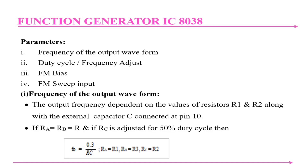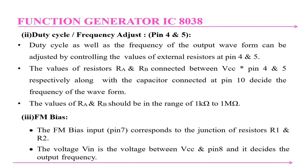The output frequency depends on the values of resistors R1 and R2 along with capacitor C connected to pin 10. If Ra = Rb = R and Rc is adjusted for 50 percent duty cycle, then F0 = 0.3 / (R × C), where Ra = R1, Rb = R3, and Rc = R2. The duty cycle and frequency of the output waveform can be adjusted by controlling the external resistors at pins 4 and 5. The values of Ra and Rb should be in the range of 1 kΩ to 1 MΩ.